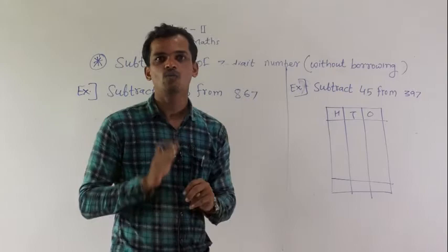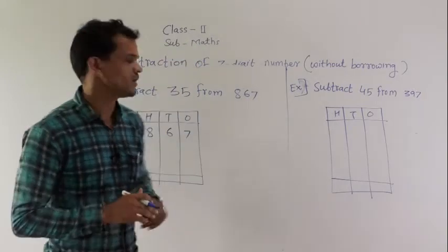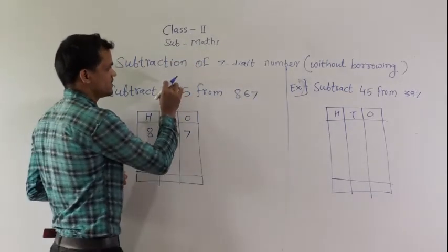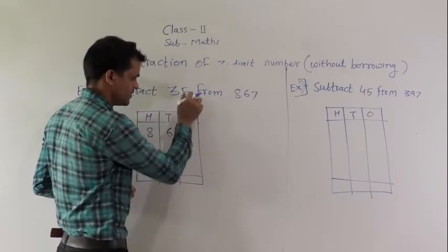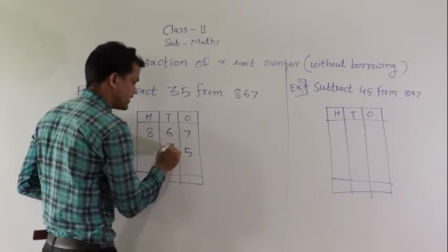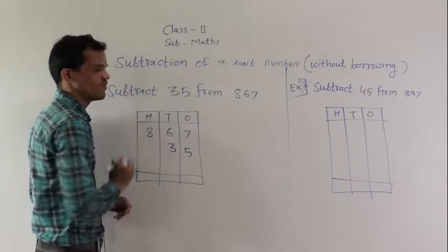And while writing the 2-digit number, start from 1's place to write. So, here 35, 1's place digit is 5. So, write it under the 1's place column and then write 3 at the 10's place column.